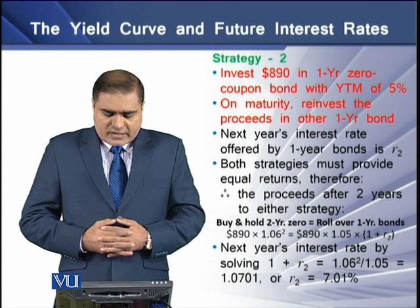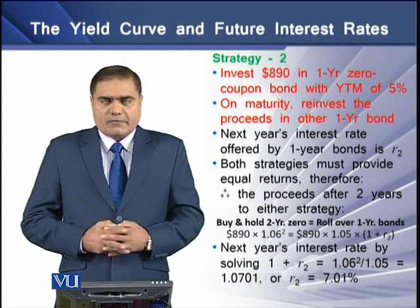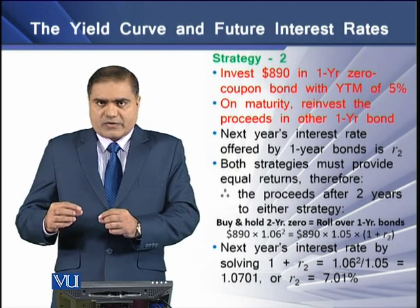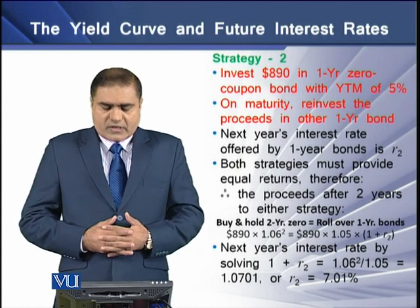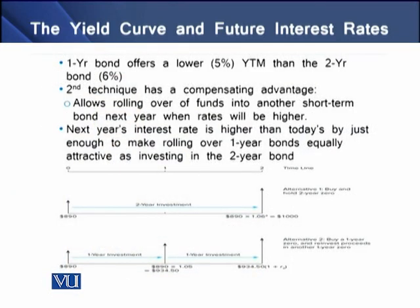Quantifying this, we set $890 × 1.06² equal to $890 × 1.05 × (1 + R2). Solving for R2, the next year's interest rate equals 7.01% — the rate that equalizes the two strategies. The one-year bond offers a lower YTM of 5% than the two-year bond at 6%, but the rollover strategy has a compensating advantage: it allows rolling over funds into a shorter-period bond next year when rates will be higher at 7.01%, making the rollover equally attractive.